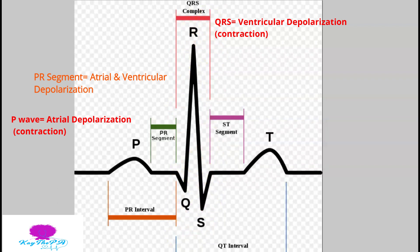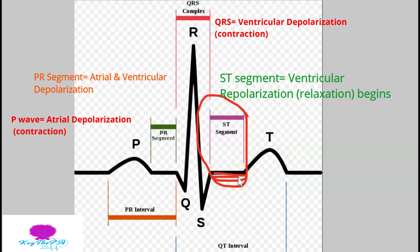Next we have our ST segment. The ST segment is the beginning of ventricular repolarization, also known as ventricular relaxation. Depolarization means contraction and repolarization means relaxation. So after our ventricles contract, they have to relax — and this is the start of that relaxation.